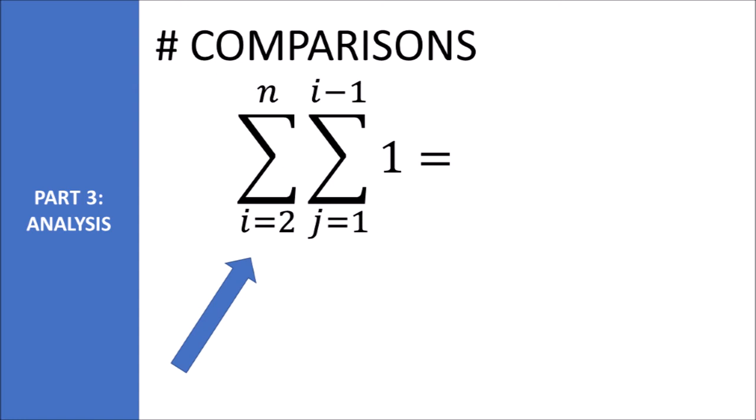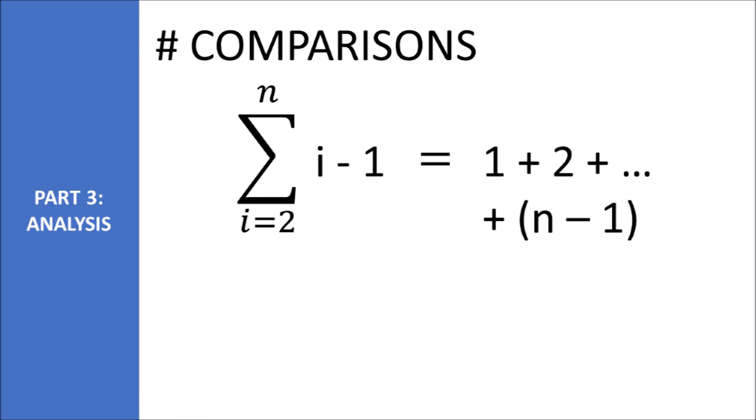We then iterate through the outer loop, adding the number of swaps in the inner loop for each iteration of the outer loop. The inner loop iterates through all the elements before i, so it runs i minus one times. If we plug in i, we see it results in two minus one iterated up by one all the way up to n minus one.